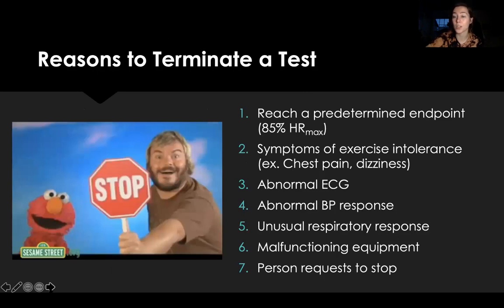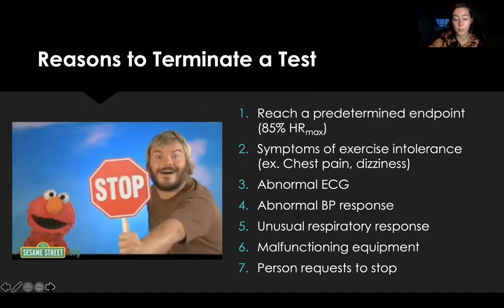Now for reasons to terminate a test. The first reason is reaching the predetermined endpoint, which is 85% of predicted heart rate max. We use 220 minus age to get predicted heart rate max, then multiply by 0.85 to get 85% of heart rate max.